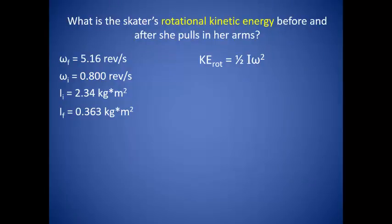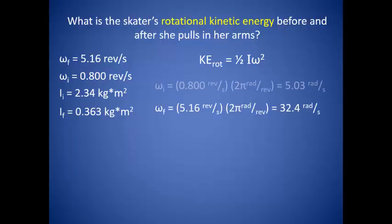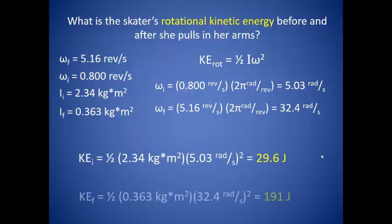So what is the skater's rotational kinetic energy before and after she pulls in her arms? We know that rotational kinetic energy is found using the moment of inertia and the angular velocity. Remember that angular velocity needs to be converted from revolutions per second to radians per second by multiplying by 2 pi. For the initial rotational kinetic energy, we use the initial moment of inertia and initial angular velocity; for the final, we use the final values. The initial rotational kinetic energy is 29.6 joules, while the final rotational kinetic energy is 191 joules — simply by pulling in her arms, the skater greatly increases the energy associated with her rotation.